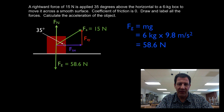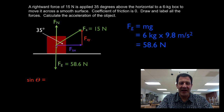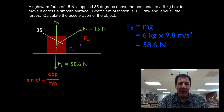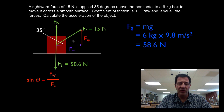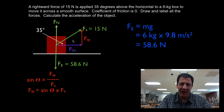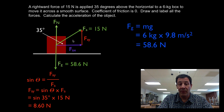We have a 35-degree angle and a right triangle, with the applied force as the hypotenuse at 15 Newtons. We use the sine function — opposite over hypotenuse — to find FAY. FAY equals sine of 35 times 15 Newtons, which gives us the y component of the applied force as 8.6 Newtons.